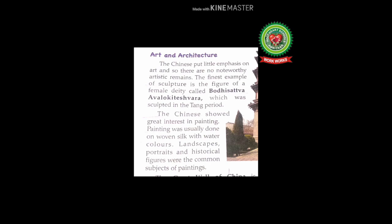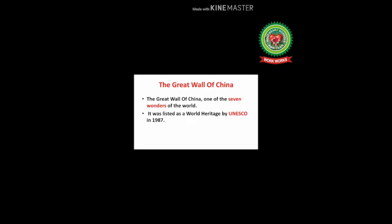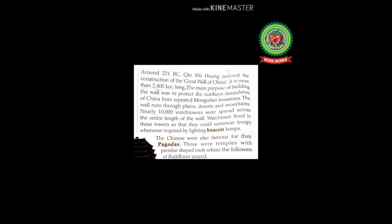The Great Wall of China is the most outstanding example of Chinese architecture. It is one of the seven wonders of the world and was listed as a World Heritage Site by UNESCO in 1987. Around 221 BC, Qin Shi Huang ordered the construction of the Great Wall of China.